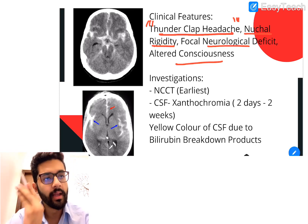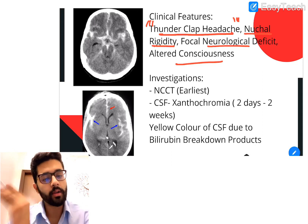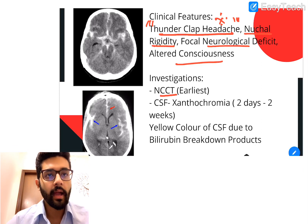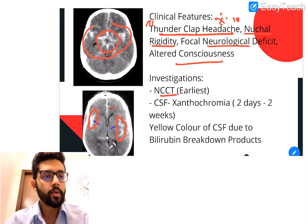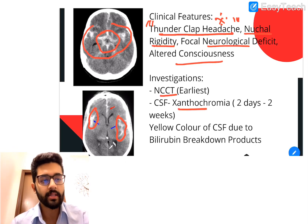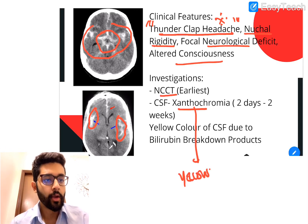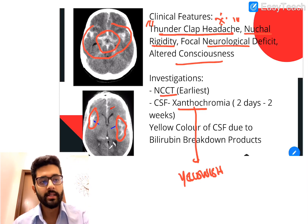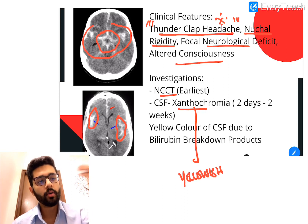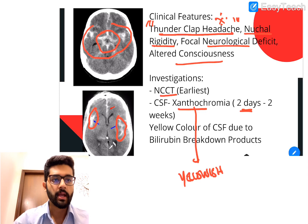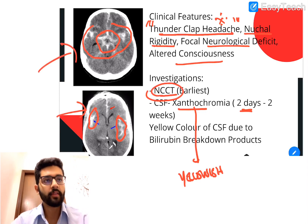To summarize: in EDH the key feature is the lucid interval; in SDH it's slow-onset headache and drowsiness following a history of trivial trauma; in SAH the most important feature is the thunderclap headache described as the worst headache of their life. The earliest investigation is NCCT — non-contrast CT brain — which shows hyperdense areas indicating the bleed. Xanthochromia in the CSF, a yellowish color from bilirubin breakdown of RBCs, is also seen in SAH, developing within two weeks of the bleed.